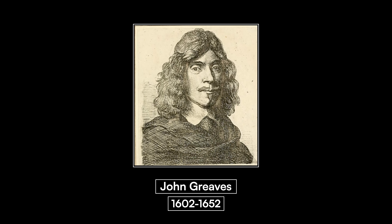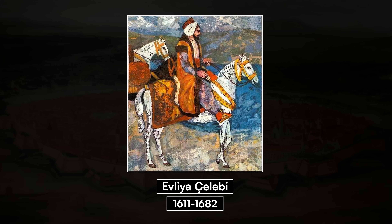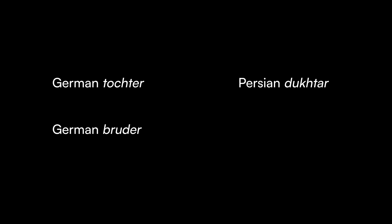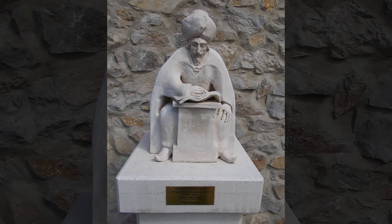Another scholar, John Greaves, observed that many Persian words are similar to English ones, but provides both English and Latin equivalents to the Persian words. Evliya Celebi, an Ottoman explorer, during his visit to Vienna noted similarities between German and Persian — for example, German Tochter, Persian tohtar; German Bruder, Persian barotar — remarking that German is a very difficult language in which there are many Persian words. Celebi believed the reason for this was that the German speakers had originated from Persia.